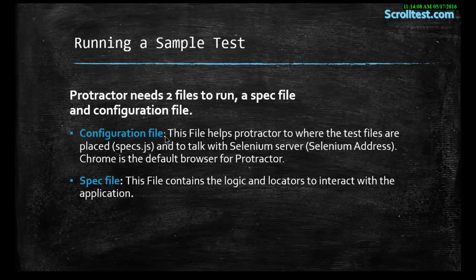So the basic question is: how can we run a simple Protractor test? We need only two files. If you have basics of JavaScript that would be helpful, but if not, just follow along and see the code to understand what is going on. The configuration file tells Protractor about the Selenium web address we have started using the webdriver-manager start command, and specifies where the spec.js file is. The spec.js file contains the logic of locators — how you interact with your application and test it.